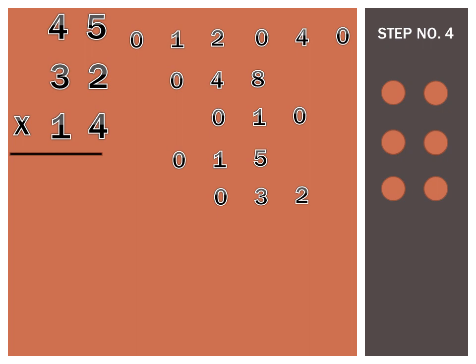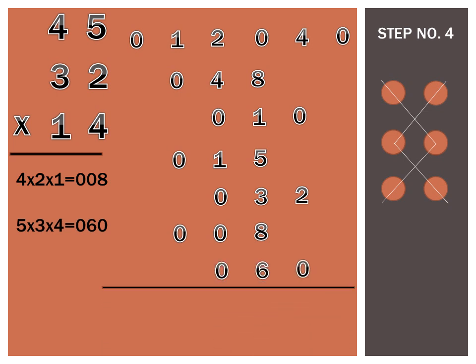Now we can already proceed to step number 4. To start with this step, let us now multiply 4 times 2 times 1. 4 times 2 times 1 is 8, but I have to write it as 0, 0, 8. And then afterward I'm going to write 0, 0, 8 at the sixth row of the solution process. And then for the next step, what is 5 times 3 times 4? 5 times 3 times 4 is 60, but I have to write it as 0, 6, 0. And then at the seventh row of the solution process I will write 0, 6, 0 this way.